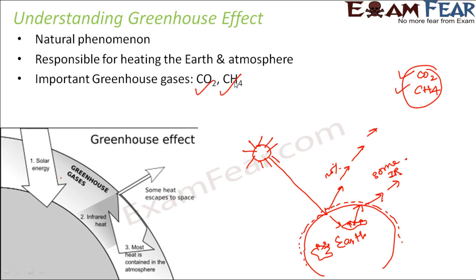You might wonder: if greenhouse effect increases the temperature of the earth, isn't that desirable? Why are we considering it an environmental issue? Increasing the temperature of the earth is good only to some extent. If the earth gets heated up too much, it causes problems for the organisms surviving on the earth. The amount of greenhouse gases has increased too much, so the earth's atmosphere is getting excessively heated up, which has an adverse effect on the environment.